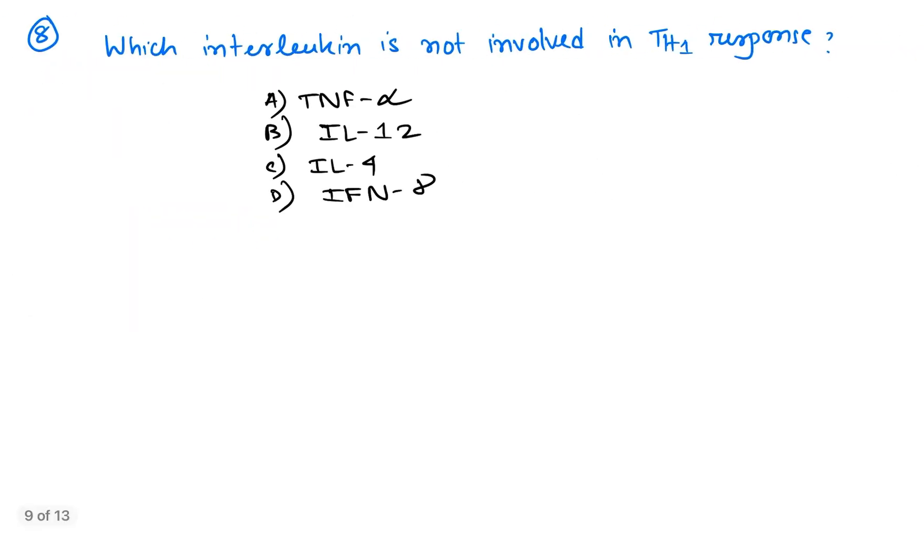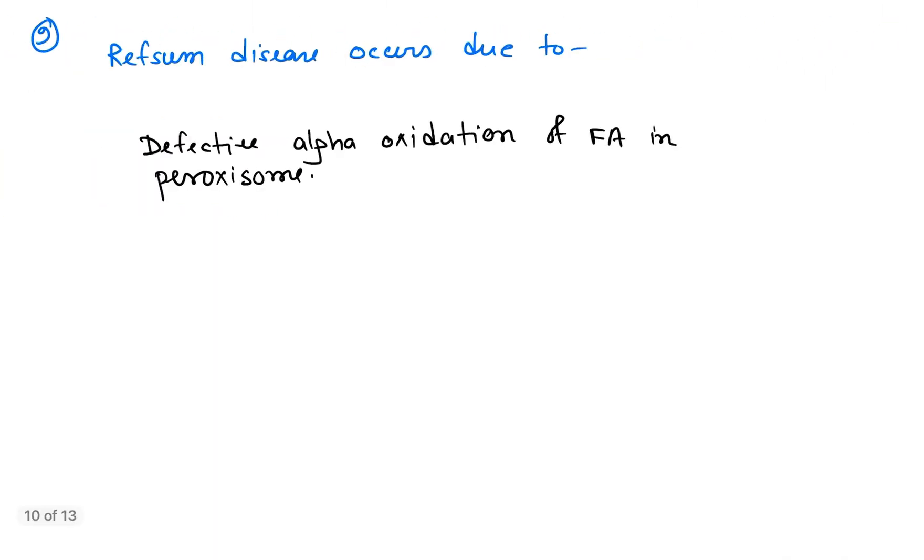Question number seven: Which interleukin is not involved in Th1 response? Answer will be interleukin-4 is not involved in Th1 response, because all other options like tumor necrosis factor alpha, interferon gamma, and interleukin-12 are involved in Th1 response.